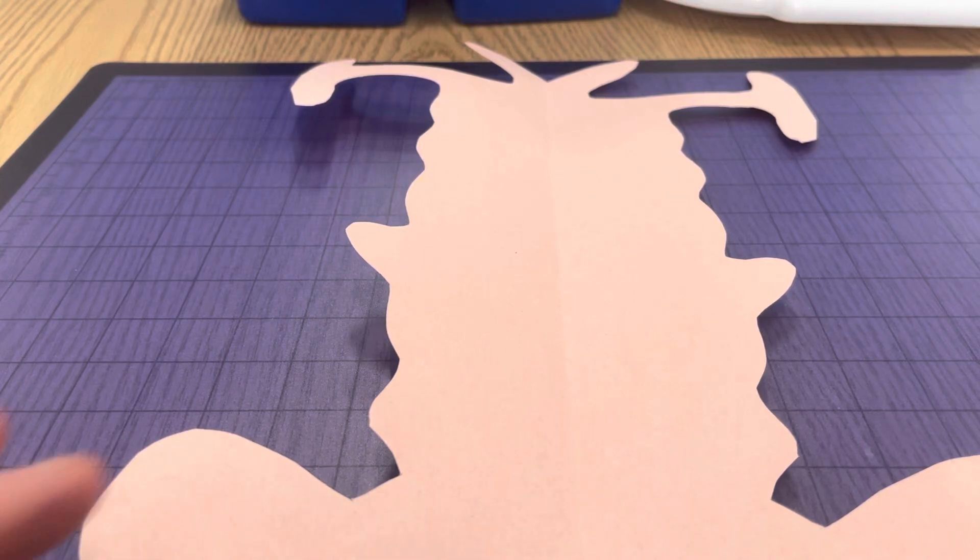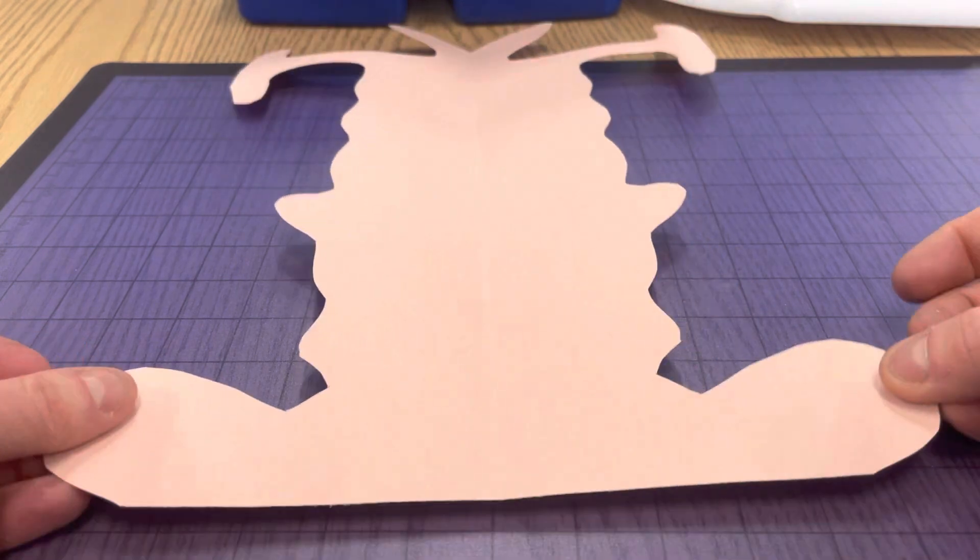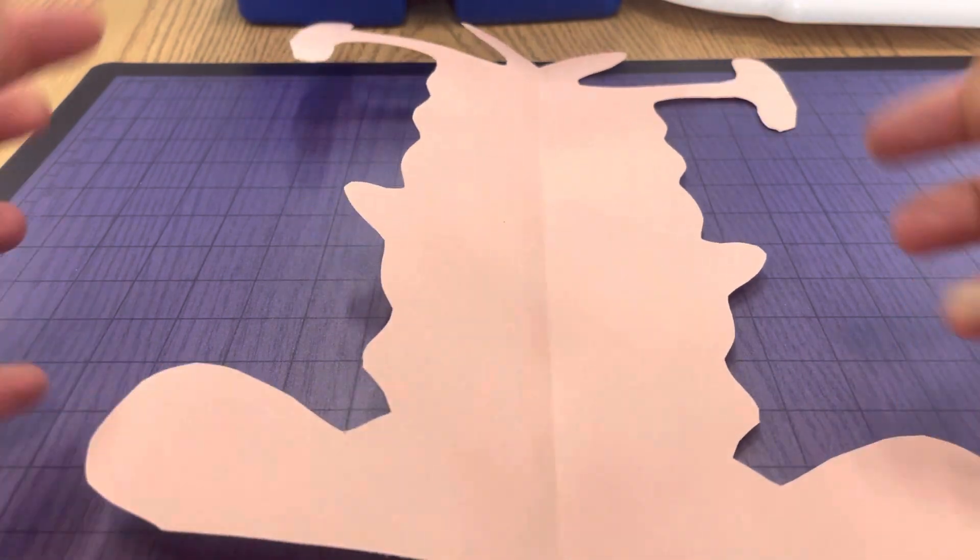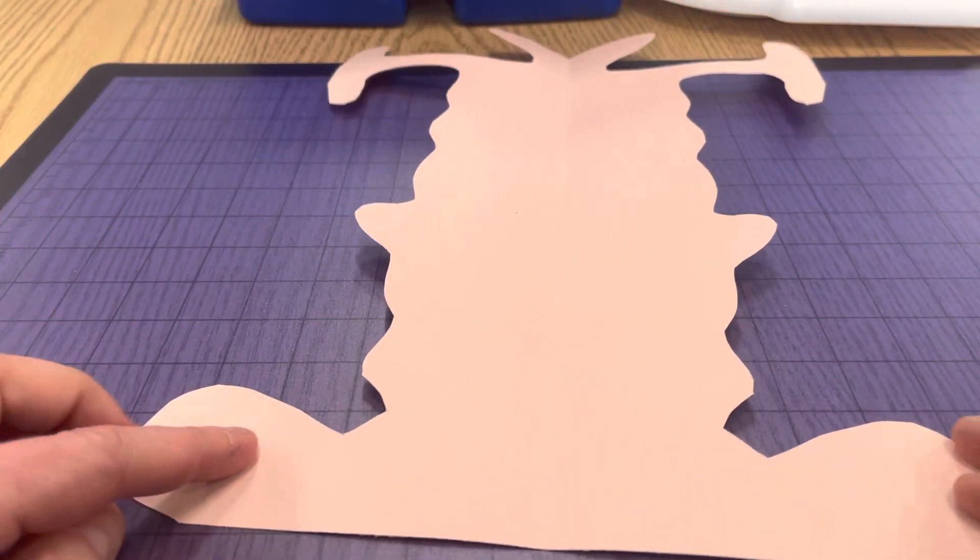All right, artists, now you can use crayons or markers to make your alien come to life and be symmetrical.